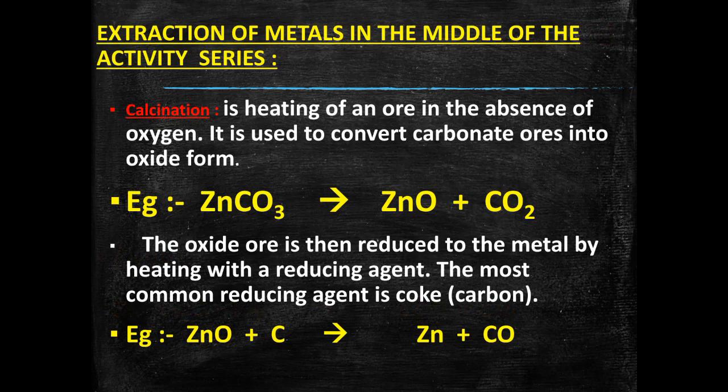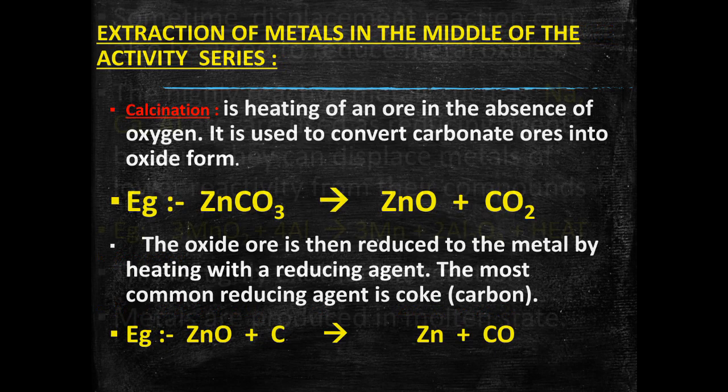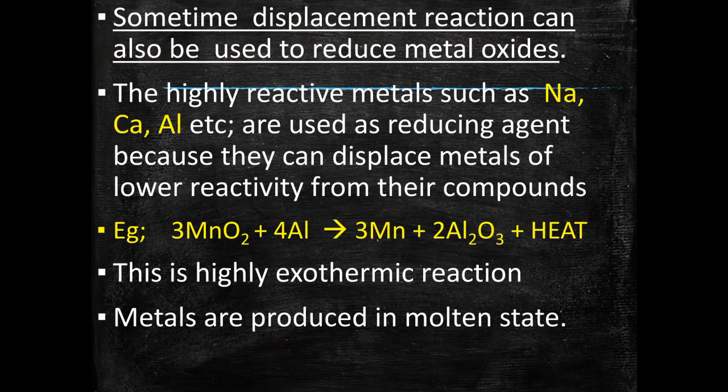Now both roasting and calcination have given metal oxide. Finally, to obtain metal from these metal oxides, they react with a reducing agent and metal is produced. Carbon is the most common reducing agent. When metal oxide reacts with carbon, metal and carbon monoxide gas are formed. In our example, zinc oxide obtained from roasting of zinc sulfide and calcination of zinc carbonate is treated with carbon, which reduces it to zinc and carbon monoxide.